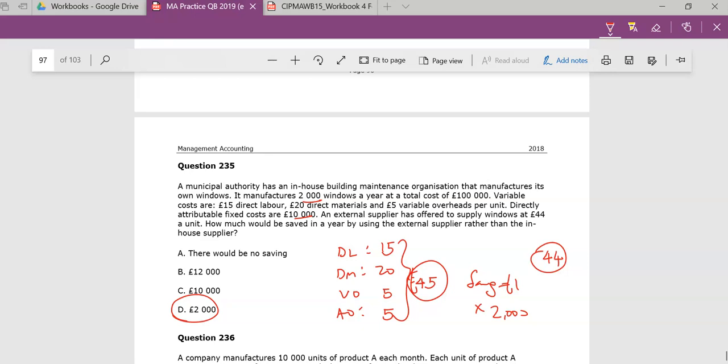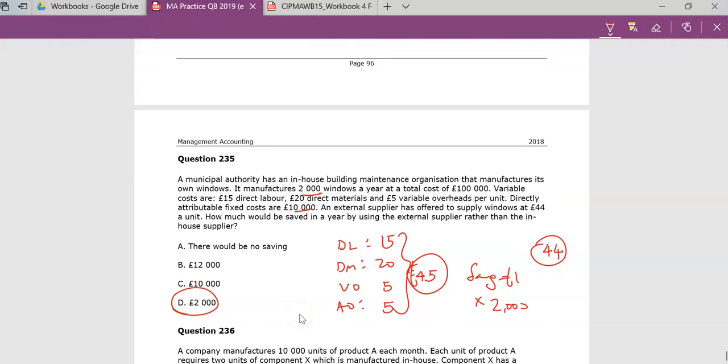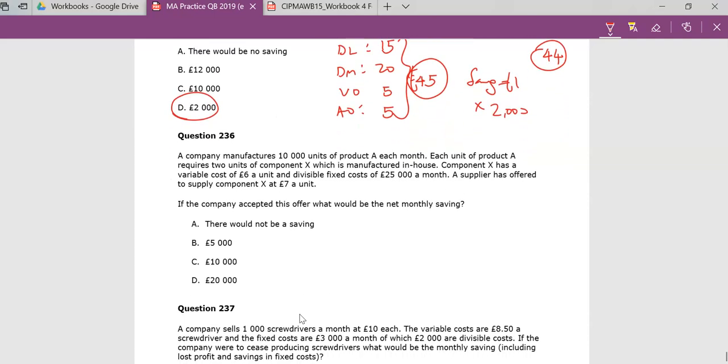Okay, the last four questions. So let's look at what's happening with 2, 3, 6. So 2, 3, 6 is telling us that we have this product A, and it needs two components. So we make 10,000 units of A, but it needs two components of component X. So basically we need 20,000 units of X.